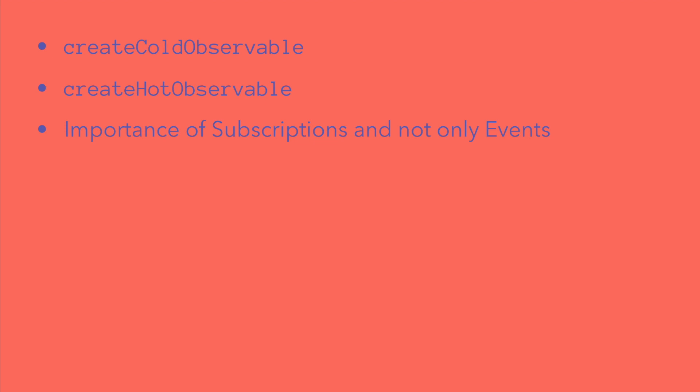A cold observable produces a side effect when you subscribe to it — the observer does nothing until you subscribe. Think of a typical API request: you can create the observable, but until you subscribe, the request is not executed. Importantly, if you subscribe more than once, that side effect is performed more than once. The opposite is the hot observable — it's always live. Think of the X/Y position of your mouse cursor: those coordinates change as the user moves the mouse regardless of whether anyone is subscribed.